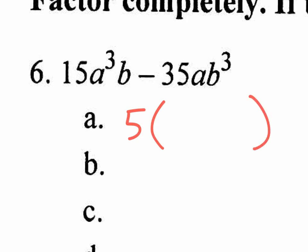But could you pull out anything else besides the five? There's A's right here, so you could at least pull out an A and a B. So five AB is the GCF. It's not difficult — it's just maybe you haven't practiced in a while.